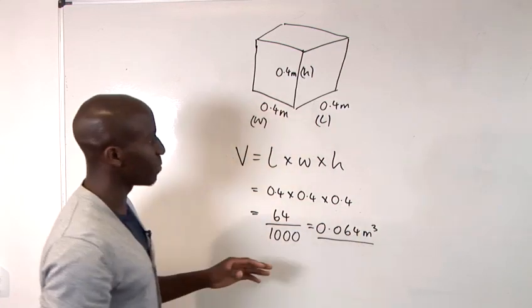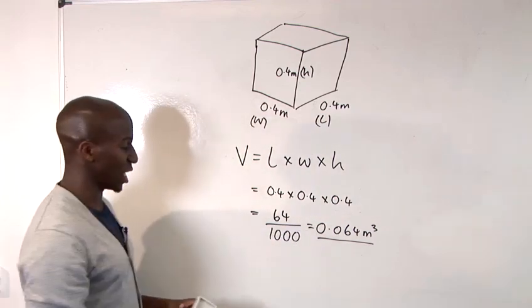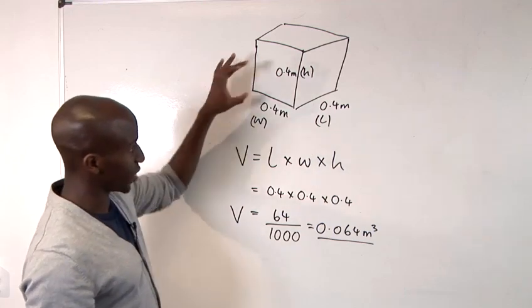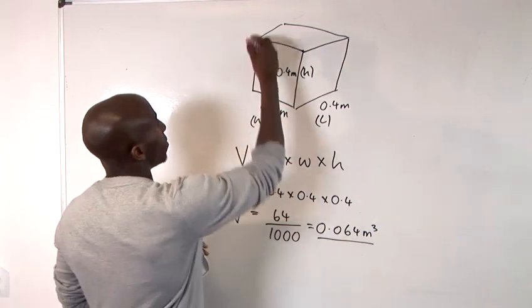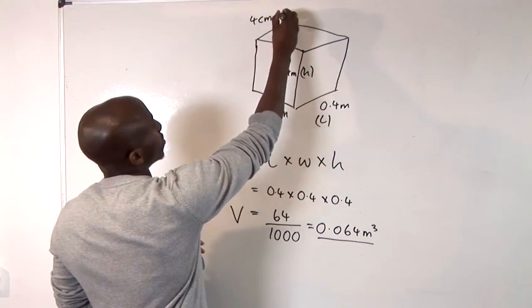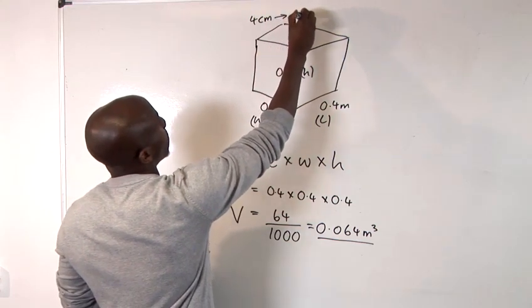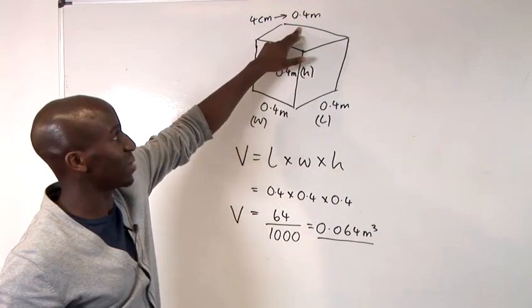Remember, this is your measurement for volume in cubic metres. First thing I've done here was calibrate from my 4 centimetre measurement to my 0.4 metres measurement. Those were for the lengths.